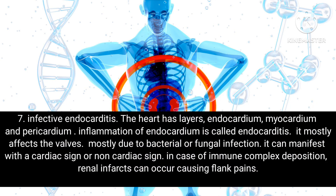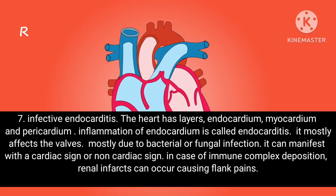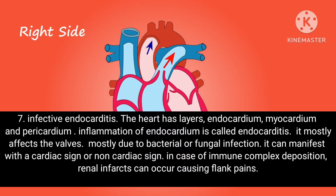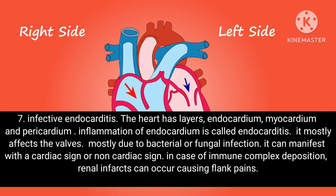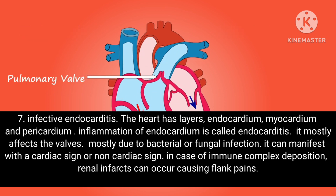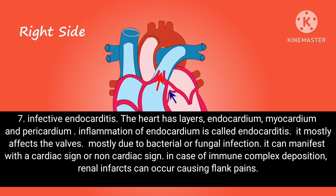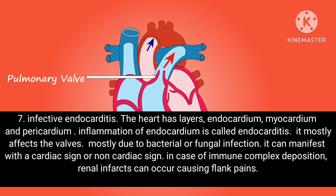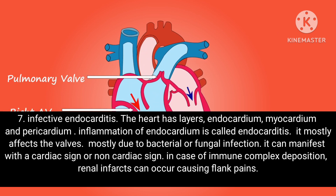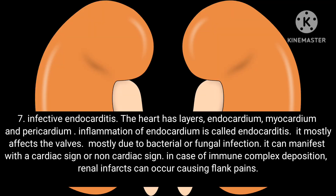Seventh, infective endocarditis — the heart has layers: endocardium, myocardium, and pericardium. Inflammation of the endocardium is called endocarditis, mostly affecting the valves due to bacterial or fungal infection. It can manifest with cardiac or non-cardiac signs. In case of immune complex deposition, renal infarcts can occur, causing flank pains.